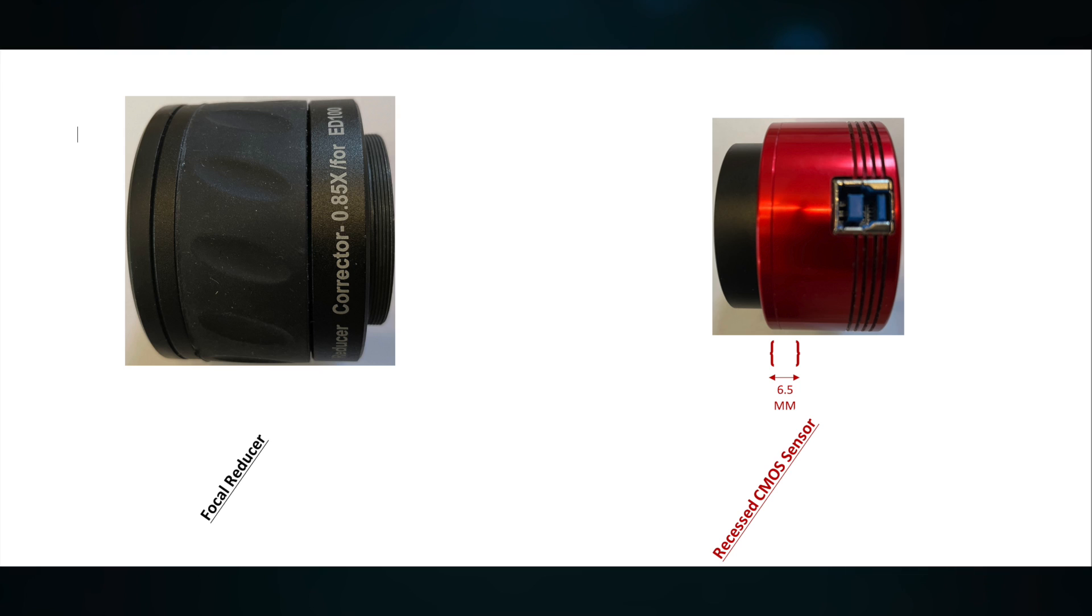Determining the backside of the focal reducer is fairly simple. You don't include those threads sticking out, so just the back edge. But the camera is a little different. You need to determine the depth of the camera sensor inside because it's usually recessed.